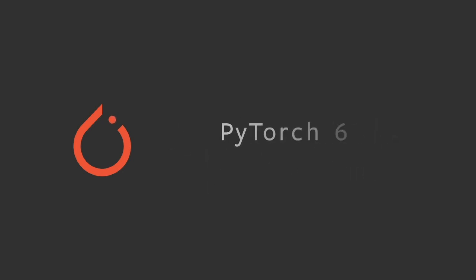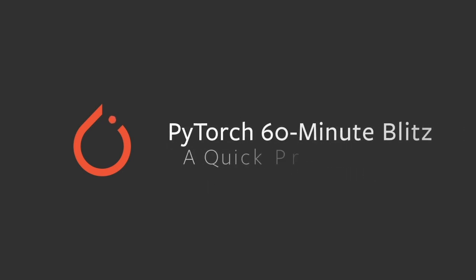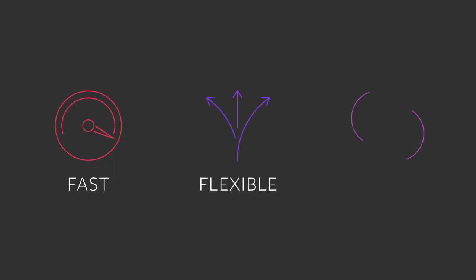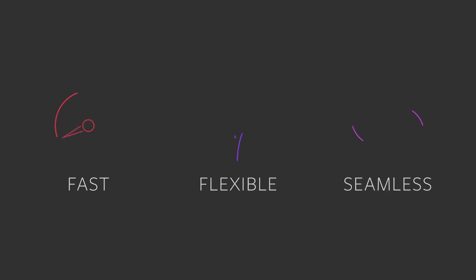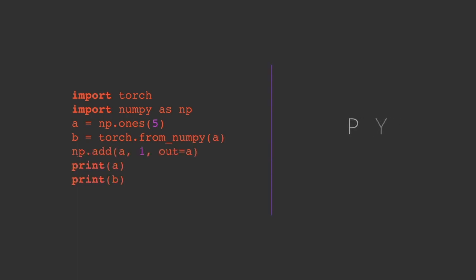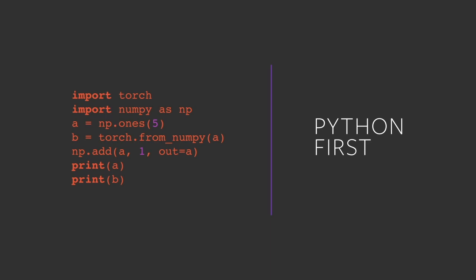PyTorch is one of the most popular open-source deep learning frameworks. Both researchers and developers use PyTorch because it provides fast, flexible experimentation and a seamless transition to production deployment. PyTorch is built to use the power of GPUs for faster training and is deeply integrated into Python, making it easy to get started.